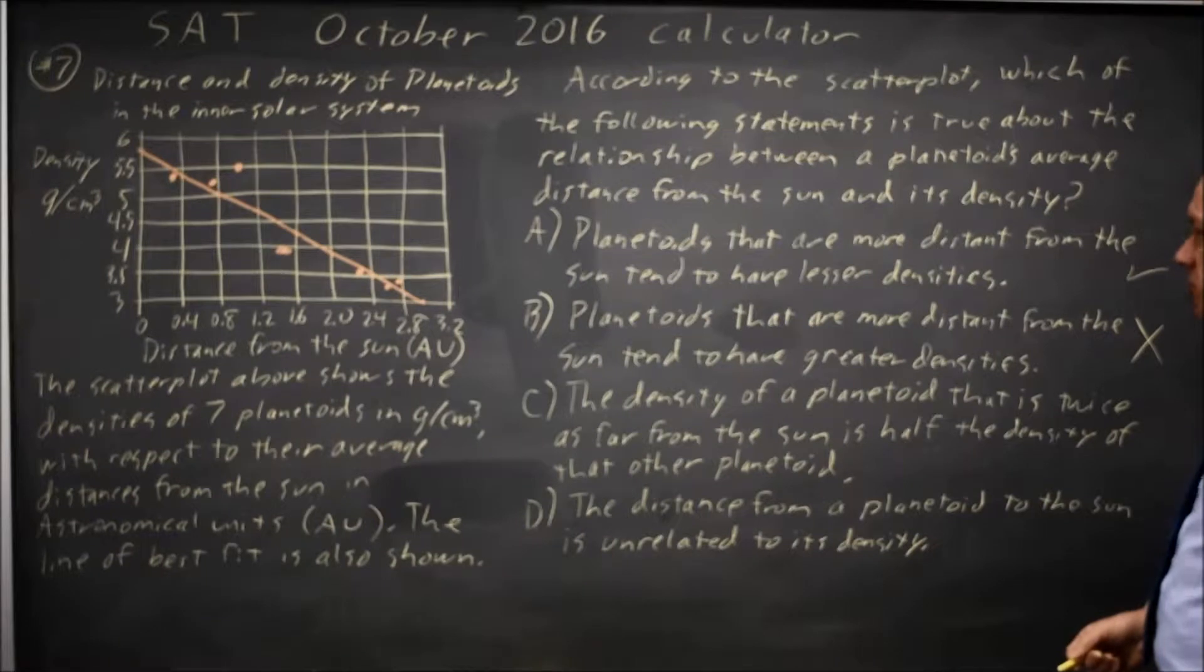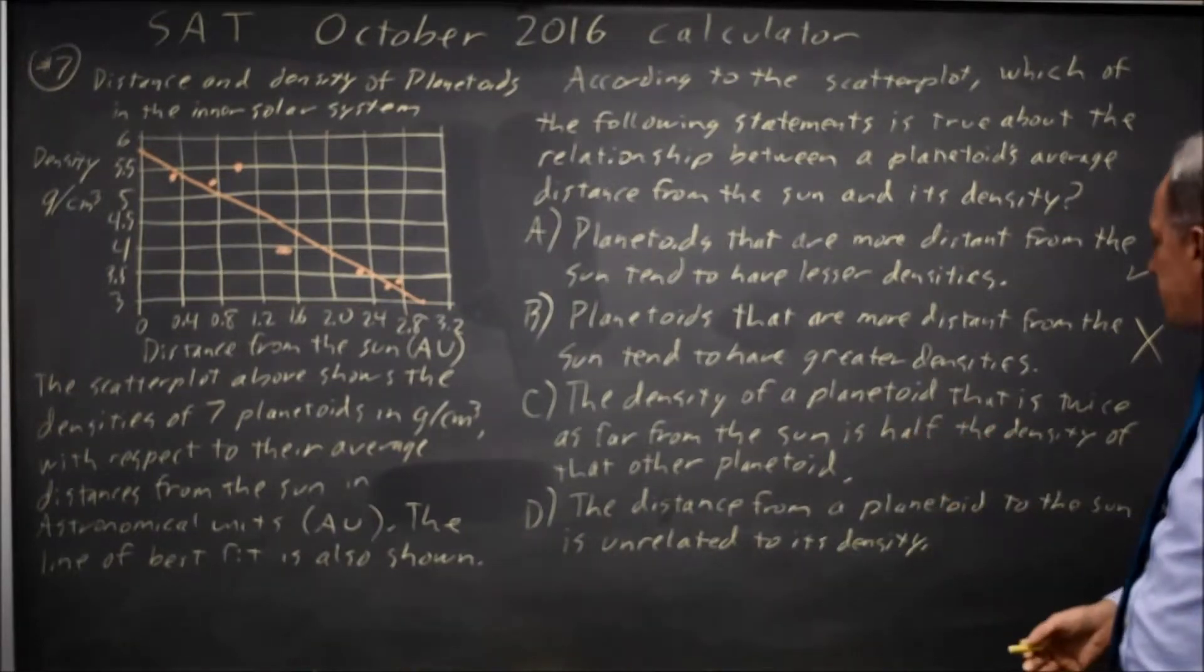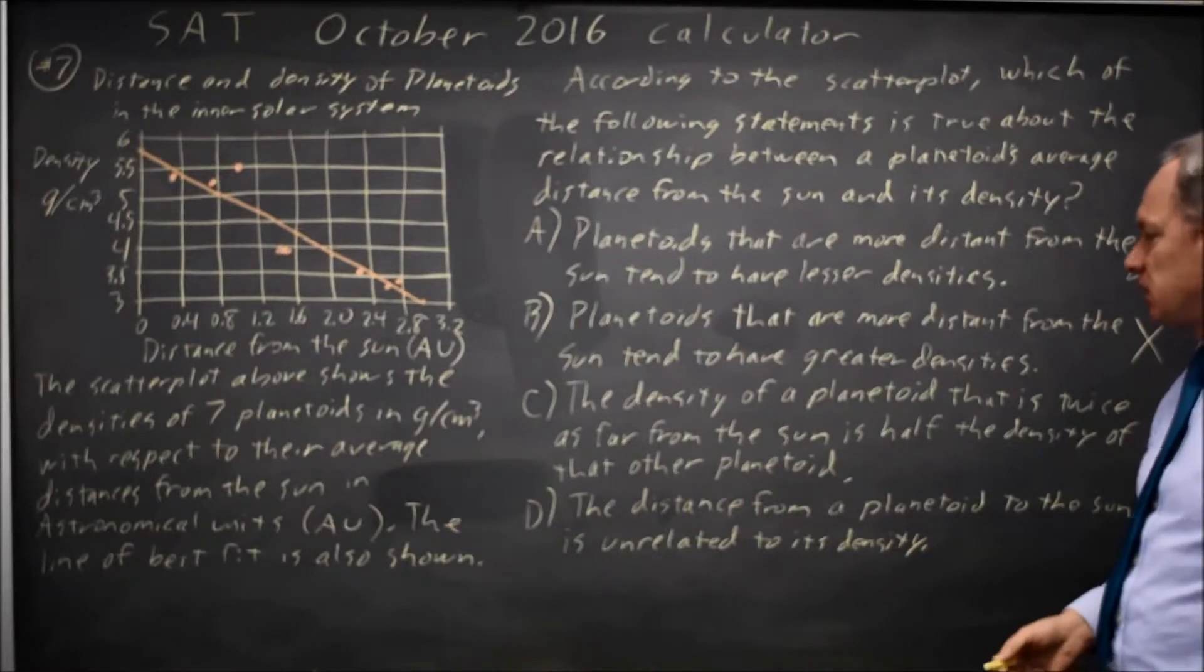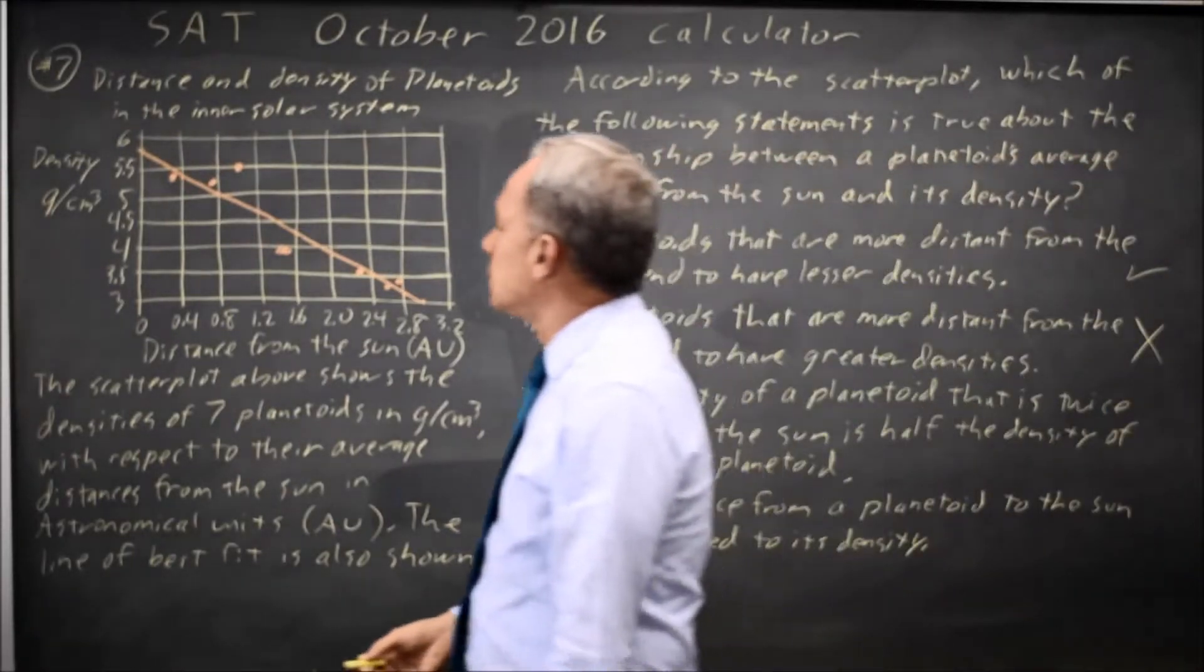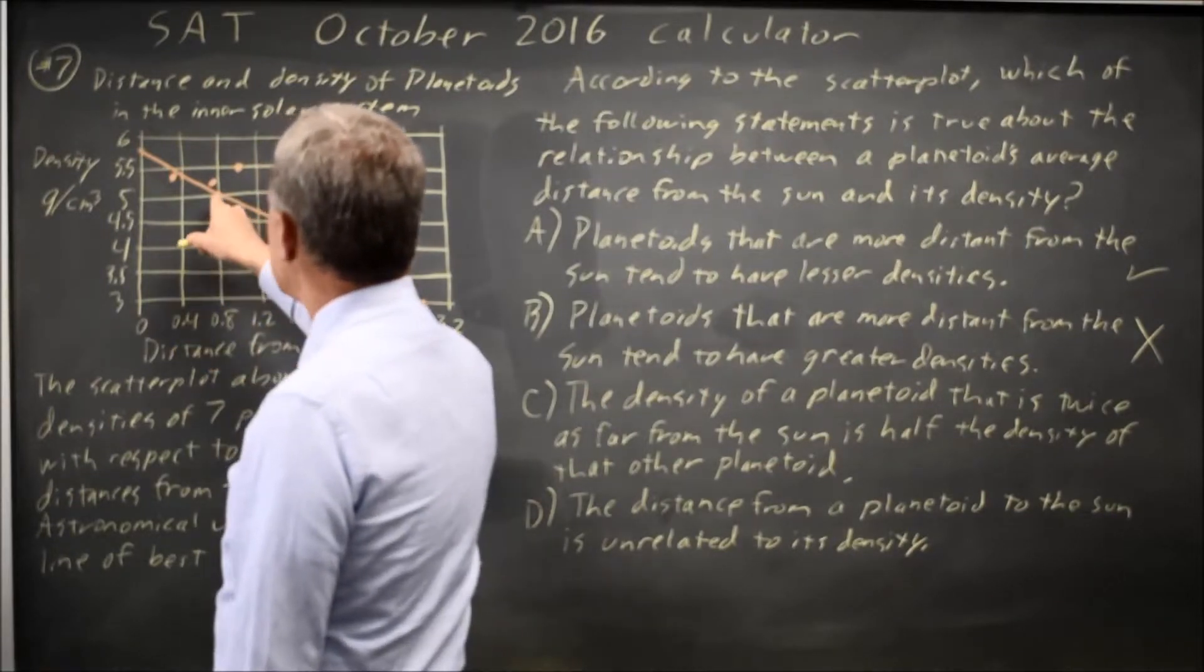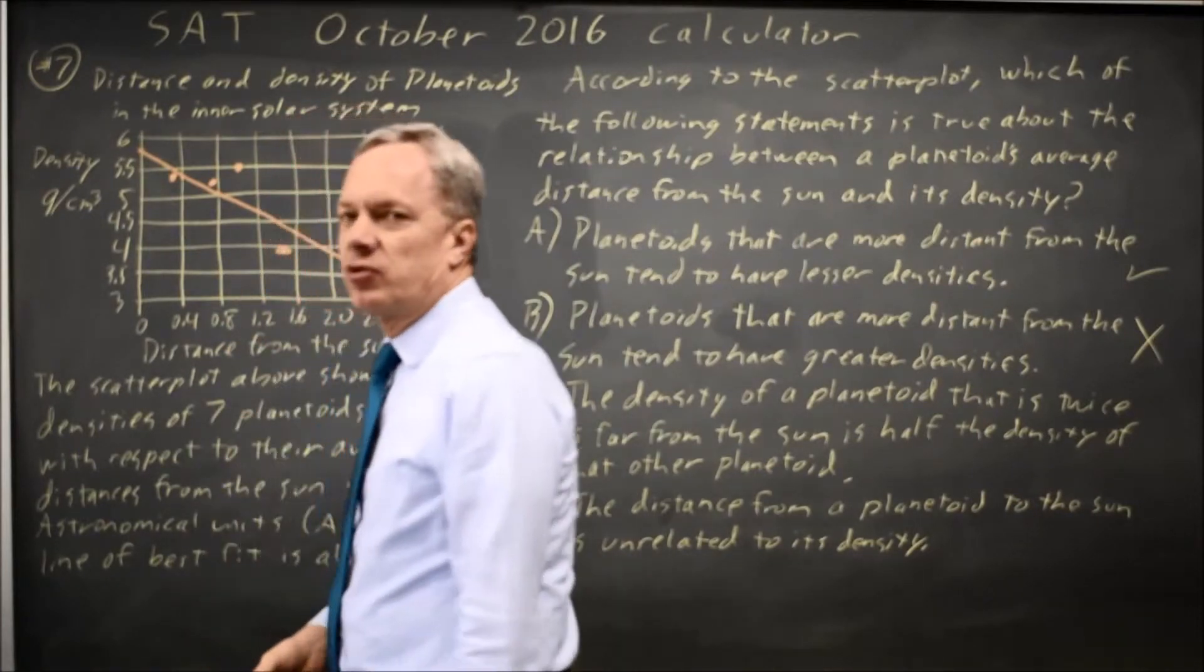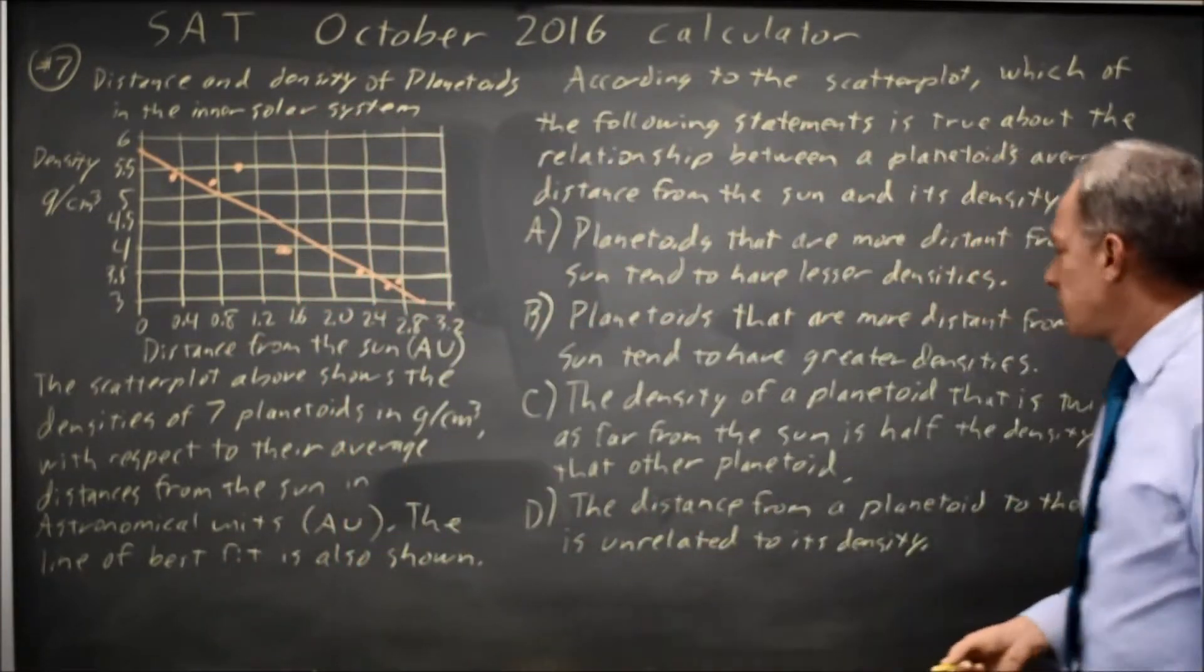Choice C, the density of a planetoid that's twice as far from the sun is half the density of that other planetoid. So let's look at two specific distances, how about point A and one point six? At point A, our density is predicted to be five, and one point six, our density is predicted to be more than four. More than four is not half of five, so choice C is not correct.